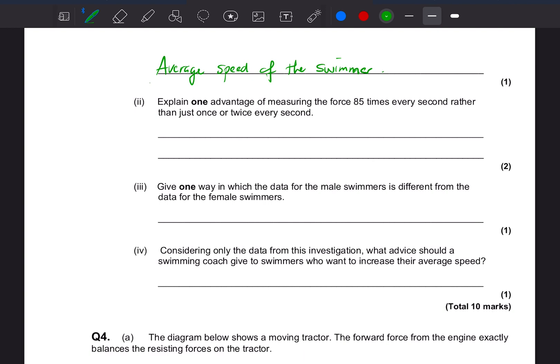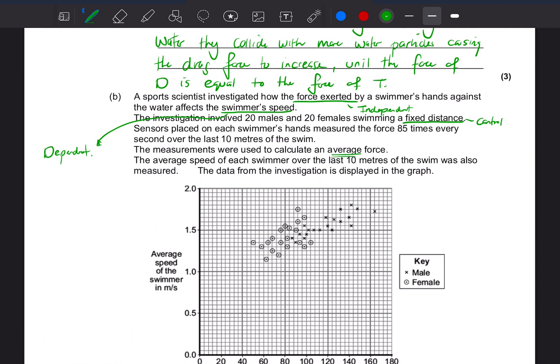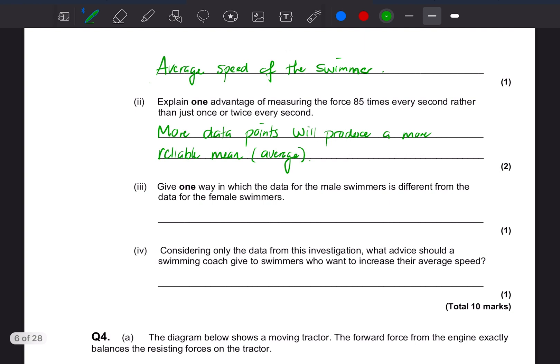Explain one advantage of measuring the force 85 times every second rather than just once or twice. What we said, it's going to give you more data. So more data points will produce a more reliable mean. They used the word average, didn't they, in their when they were talking about it here, they said average rather than mean. So we'll use their word as well. So more data points will produce a more reliable average.